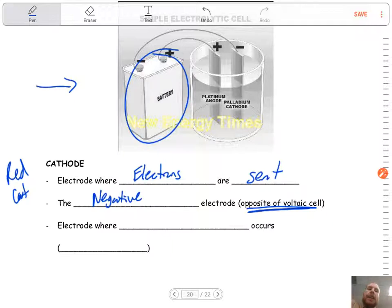Well, this is a non-spontaneous reaction. It's trying to be the reverse of the spontaneous. So if a spontaneous reaction has the cathode being positive, the non-spontaneous, or the opposite, should have it as the negative.